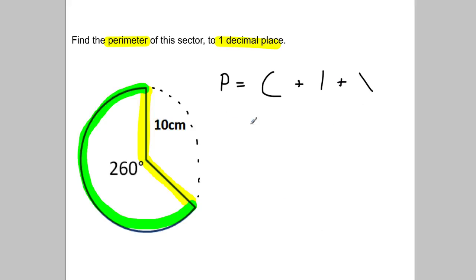How would I get the curve bit? Well, I've got 260 degrees out of a possible 360 degrees for a whole circle, and I multiply that by the circumference of a whole circle, namely pi times diameter.